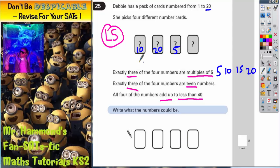Okay, so let's see what we've got so far. We've got 10, 20 and 5. Now, at the moment, I've got 3 multiples of 5, so that's okay. Clue number 1 is okay. Exactly 3 of the 4 numbers are even. Now I've got 2 evens so far. 10 is even, and 20 is even. And 5 is odd. So I'm going to need to make the last number even. Because clue number 2 says exactly 3 of the 4 numbers are even.